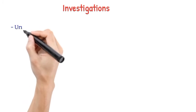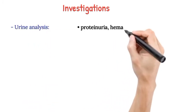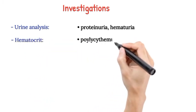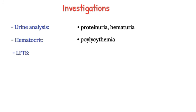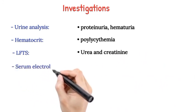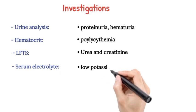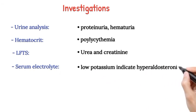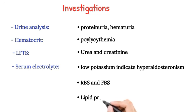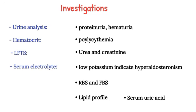Investigations: Urine analysis - proteinuria, hematuria. Hematocrit - polycythemia. LFTs, urea and creatinine. Serum electrolyte - low potassium indicates hyperaldosteronism. RBS and FBS. Lipid profile. Serum uric acid.